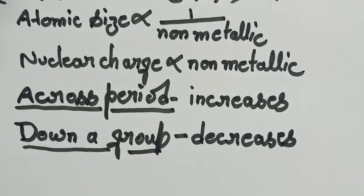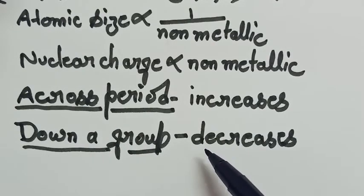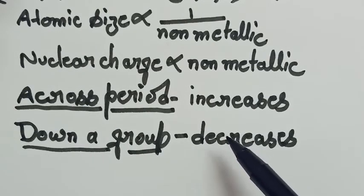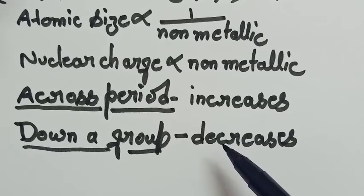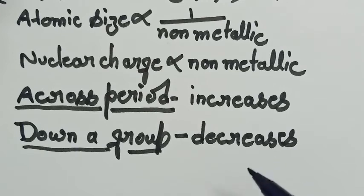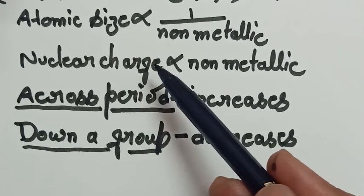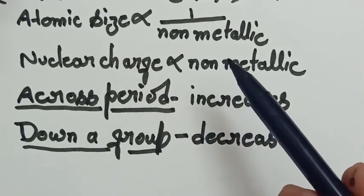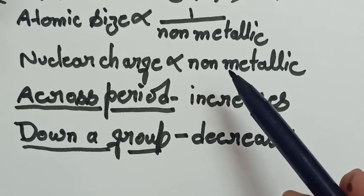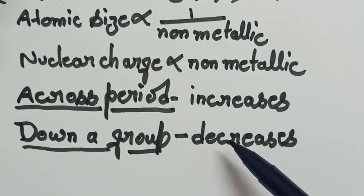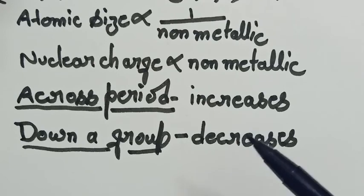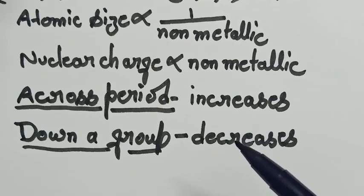As we move down the group, the non-metallic characteristic decreases. The reason is that as one moves down a group, an electron shell is added after every change of period. Thus, the nuclear charge decreases, so the tendency to gain electrons also decreases and the non-metallic characteristic also decreases. I hope everything is very clear.